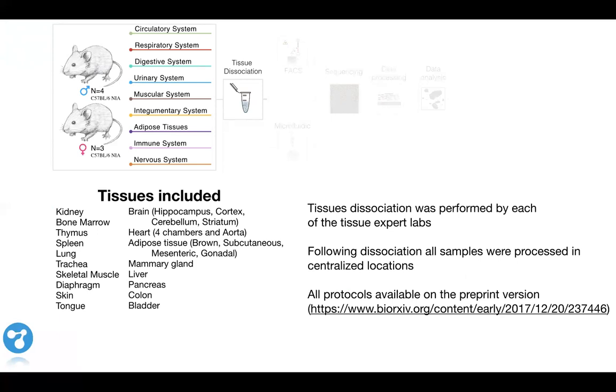For some of these tissues we also included sub-regions. For example, for the brain we tried to isolate both microglia and non-microglial cells from four different regions: the hippocampus, cortex, cerebellum, and striatum. For the heart we processed each of the four chambers separately and also included the aorta. The fat tissue we processed both brown, subcutaneous, mesenteric, and mesenteric gonadal fat, and so on.